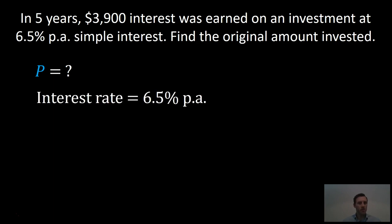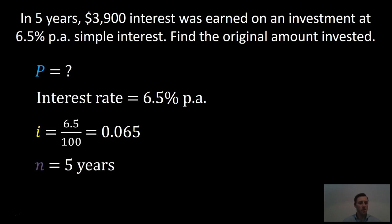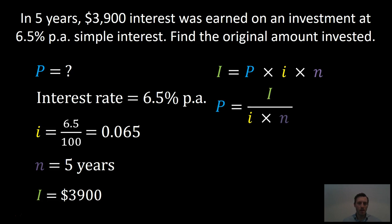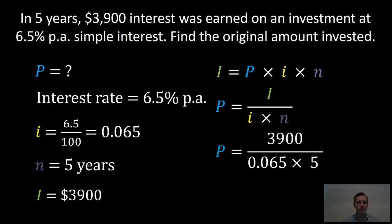The interest rate is 6.5% per annum. Converting this to a decimal gives 0.065. The time is 5 years and the interest is $3,900. Here we're using the formula where we've already converted the interest rate to a decimal. The formula is: principal equals interest divided by the interest rate as a decimal times the time. We get 3,900 divided by 0.065 times 5, which gives us $12,000. So the original principal invested is $12,000.